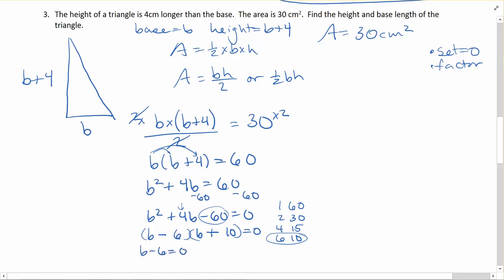To solve, we'll set both of these things equal to zero. So that means b is equal to 6 or negative 10. And here because we're dealing with a real life situation, the base of a triangle cannot be negative. So we would say the base is equal to 6 centimeters, because it wouldn't make sense to have a base of negative 10 centimeters.